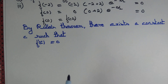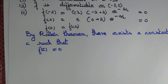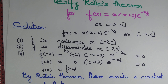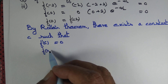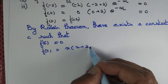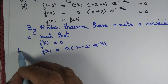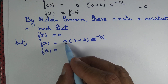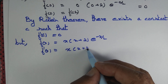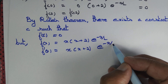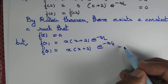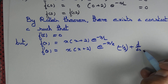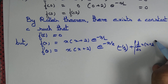So let's find f'(x). We have f(x) = x(x+2)e^(-x/2), which is a product of three functions. Applying the product rule: first, we regard the polynomial x(x+2) as the first function. Then f'(x) = x(x+2) times the derivative of e^(-x/2), which by the chain rule is e^(-x/2) times (-1/2), plus the derivative of x(x+2) times e^(-x/2).